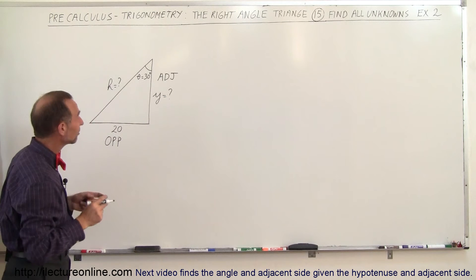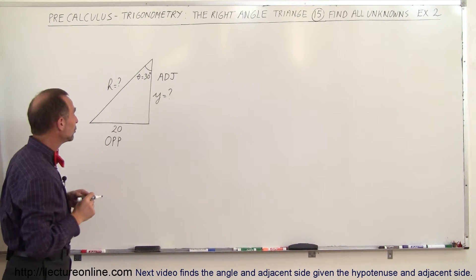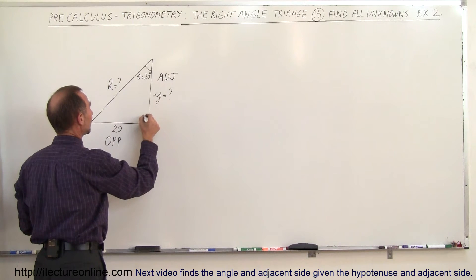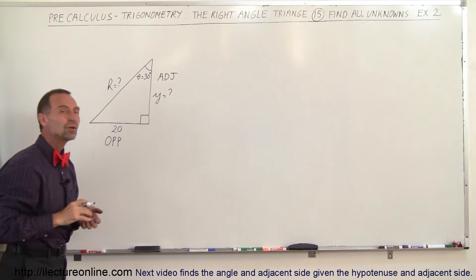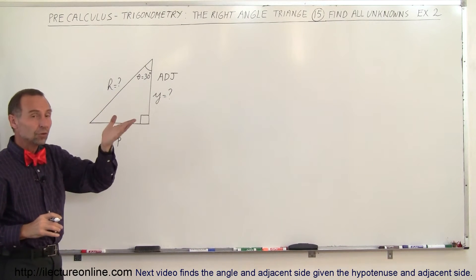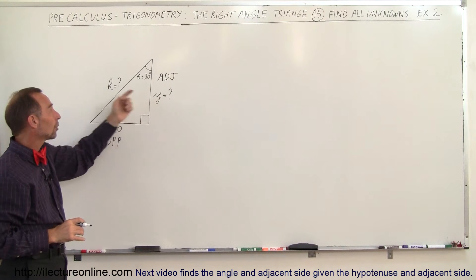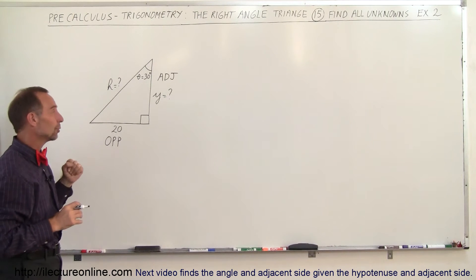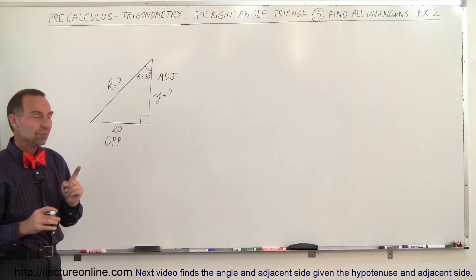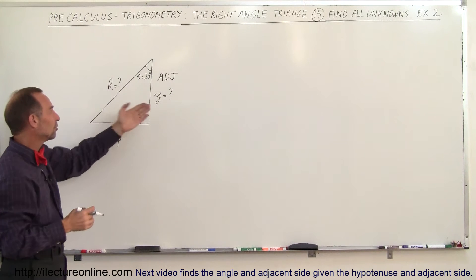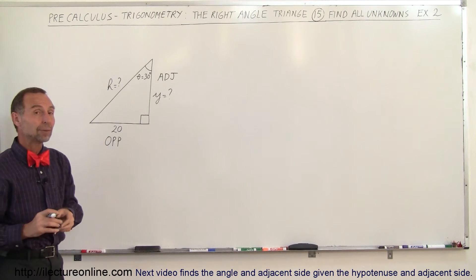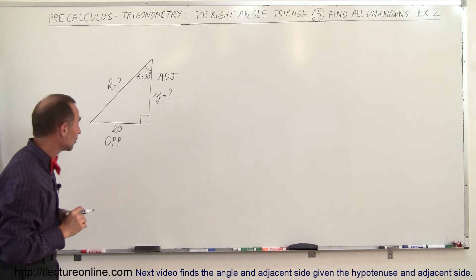Since we're looking for the adjacent side, and we do not know the hypotenuse, what should we use? Normally, looking for the adjacent side, we're thinking about the cosine, but to use the cosine, you also have to know the hypotenuse, which is not known. So we probably want to use the tangent, because the tangent relates the opposite to the adjacent, and if the angle is known, we should be able to use the tangent here.